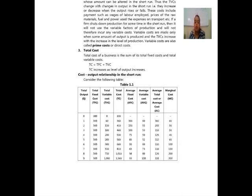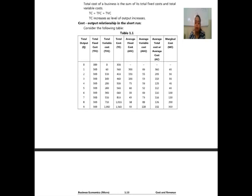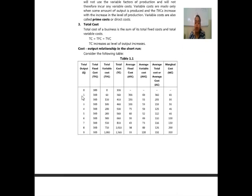Total cost of a business is the sum of its total fixed costs and total variable costs: TC = TFC + TVC. TC increases as the level of output increases. Now, consider the following table showing the cost-output relationship in the short run. The columns are: total output Q, total fixed cost TFC, total variable cost TVC, total cost TC, average fixed cost AFC, average variable cost AVC, average total cost ATC, and marginal cost MC. Marginal cost means how much it costs to produce one extra unit.